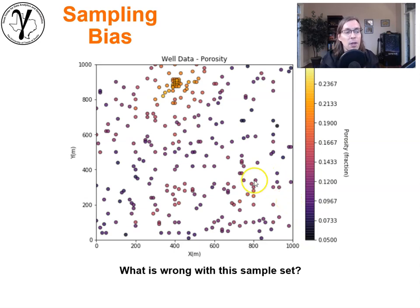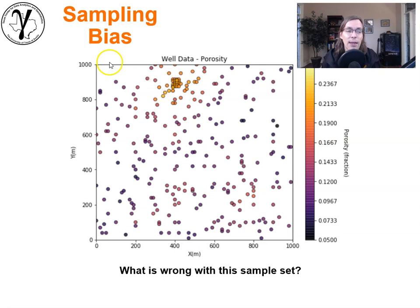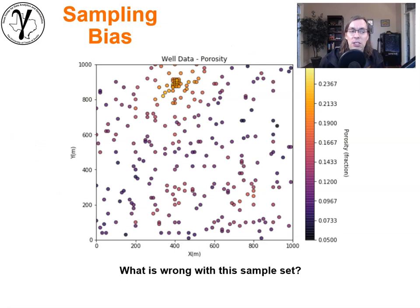Clearly we've sampled in a manner where we're more densely sampled in the high values. If we went ahead and calculated a statistic from that, we would find that the average over this area of interest would be too high — we've created a bias in the sampling. So let's think about what's the source of this bias.